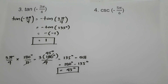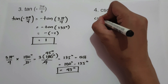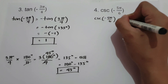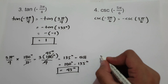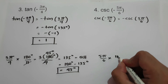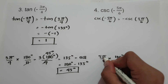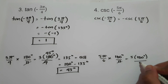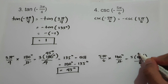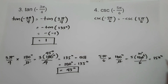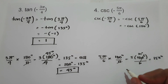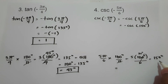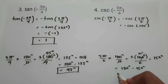What about number 4? We have cosecant(-5π/6). Cosecant is an odd function. Therefore, cosecant(-5π/6) = -cosecant(5π/6). Let us convert 5π/6 into degrees: 5π/6 × (180°/π). Cancel π, and we have 5 × 180° / 6. 180 divided by 6 is 30 degrees, and 30 times 5 is 150 degrees. So we write -cosecant(150°). 150 degrees is in quadrant 2, and the reference angle is 180° - 150° = 30 degrees.